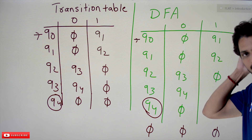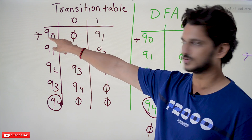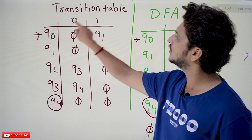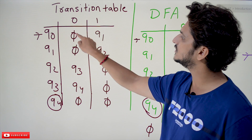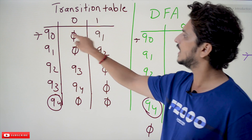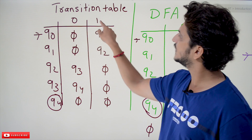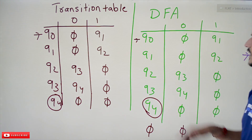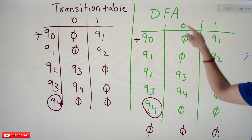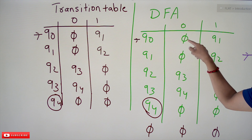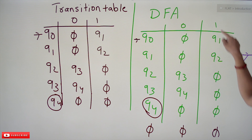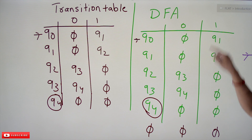Now, how to convert this NFA into DFA: we start from the initial state. Take the transition — Q0 if you apply 0 we are moving to no state, and Q0 if you take 1 we are going to Q1 state. We write here: Q0 on 0 moves to no state, Q0 on 1 moves to Q1 state.